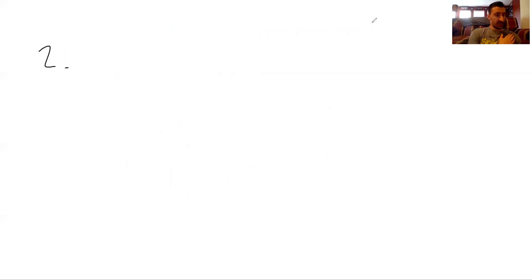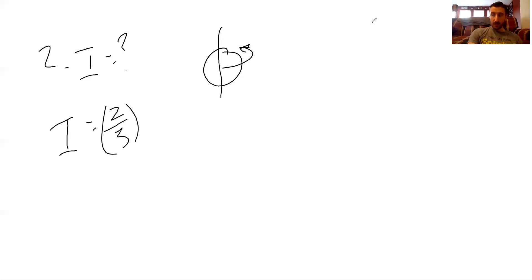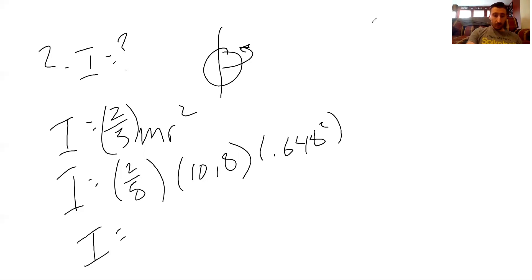Problem two: determine the moment of inertia of a 10-kilogram sphere of radius 0.648 meters when the axis of rotation is through its center. For a sphere rotating about its center, the equation is I equals two-fifths m r squared. Plugging in: I equals two-fifths times 10 times 0.648 squared, giving 1.81 kilogram meters squared.